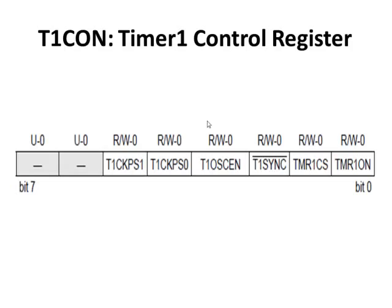Here's the timer 1 control register. Notice there are only 6 bits — much easier than the analog-to-digital, which had two full 8-bit registers. These two bits are unused. Bits 5 and 4 are the clock prescaler, selecting divide by 1, 2, 4, or 8 with combinations 00, 01, 10, or 11. Two other bits we won't concern ourselves with — leave them as 0s; consult the PIC manual for details. The timer 1 clock select bit defines whether it's a timer or a counter, and the last bit turns the timer on or off.